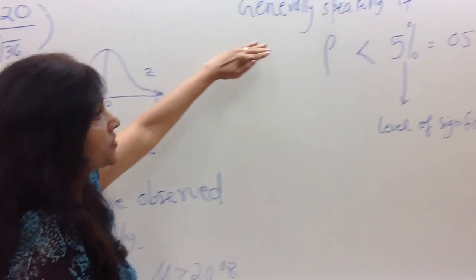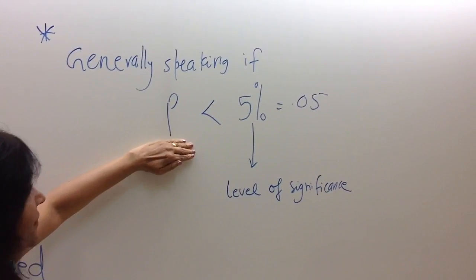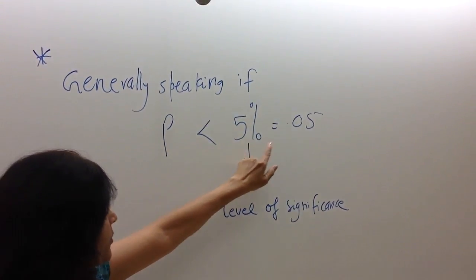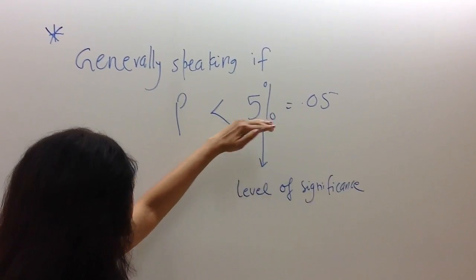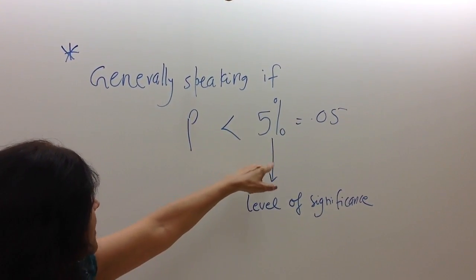And the answer is yes. Generally speaking, if the probability of an outcome is lower than 5% or 0.05, we consider that probability to be low.